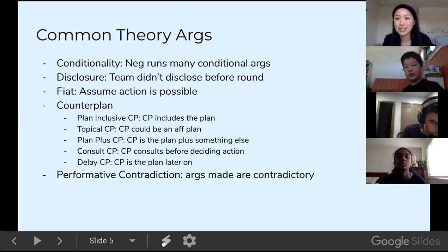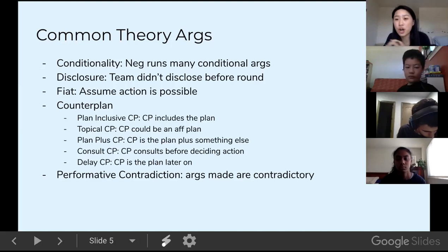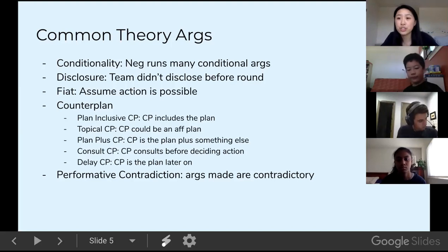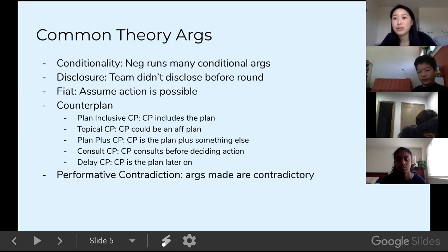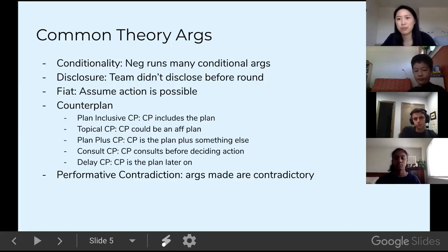The final common theory argument is performative contradiction, or 'perfcon.' There are a lot of counterplan theory arguments because people think counterplans are abusive — but then they're on the negative and run five counterplans themselves. Performative contradiction is when you argue two contradictory things: like saying the economy shutting down will cause nuclear war, but also saying the economy is stable. Or more commonly at higher levels, the negative argues racism is bad in a critique and then says something racist — that's a performative contradiction.